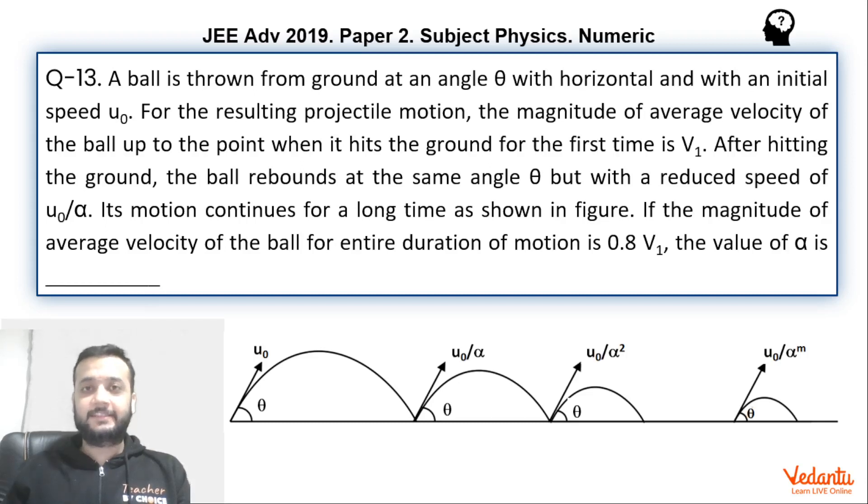Hi dear students. Let's see this question that came in JEE Advance paper 2 Physics in the year 2019. One of the easiest questions in the whole paper. This was from the topic of kinematics and was based on numeric type marking scheme.